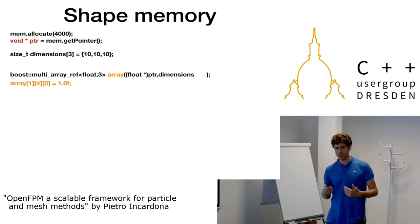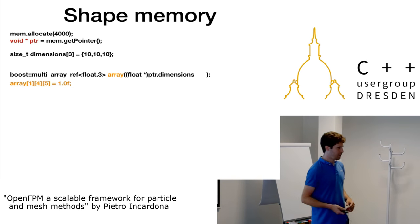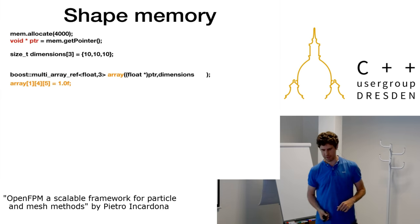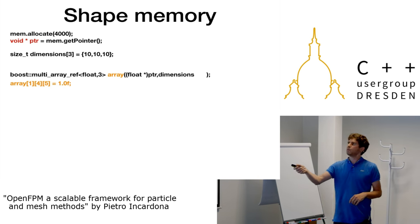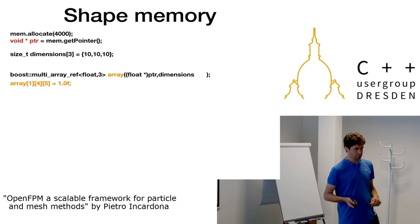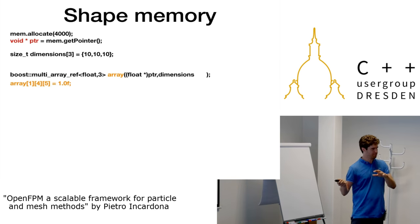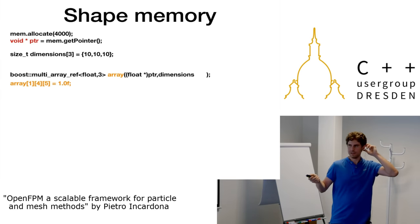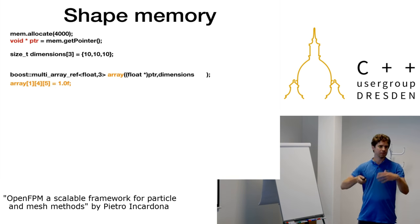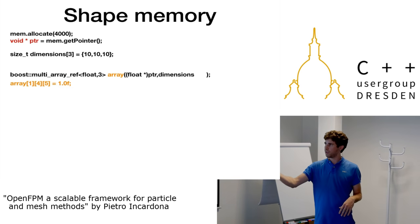Once you have memory allocation, you have to shape it — give meaning to the bytes. The first approach is a multidimensional array, a basic data structure to give shape to a 1D byte array. You allocate 4000 bytes, get the pointer, provide the dimensions of your 3D array, and then use it like a normal 3D static array.